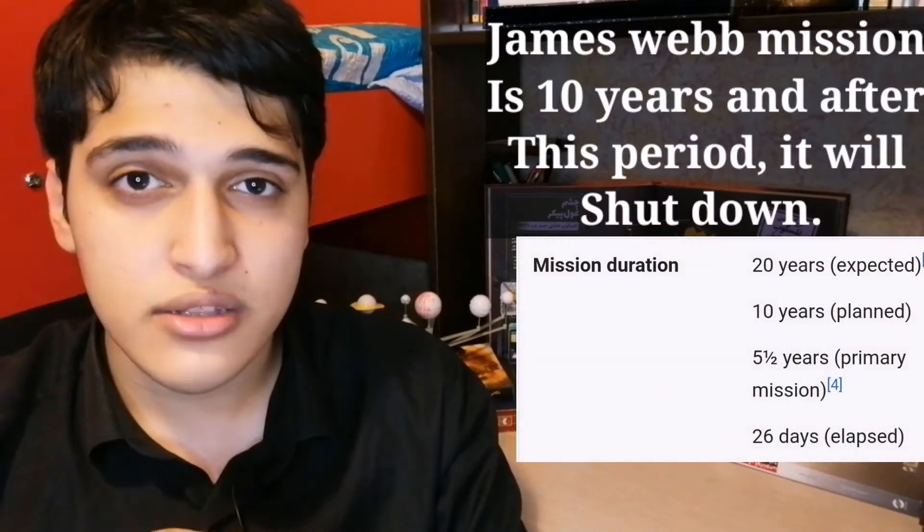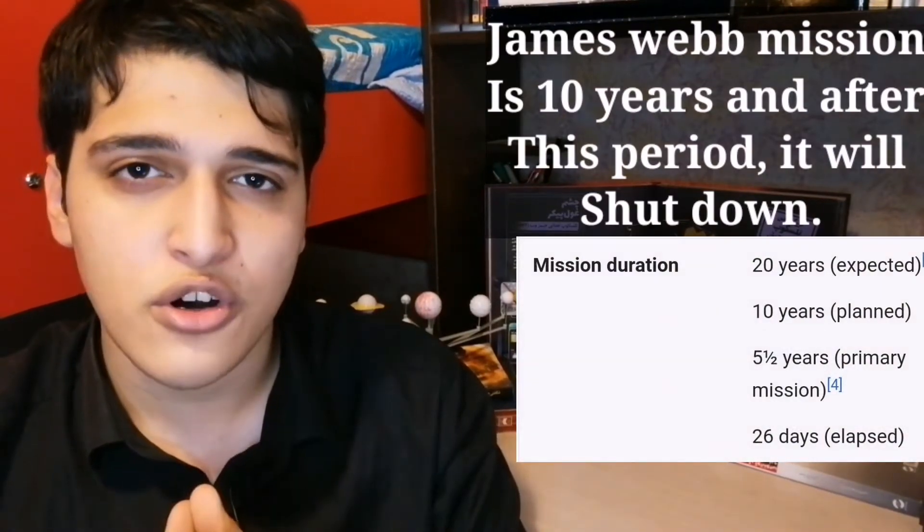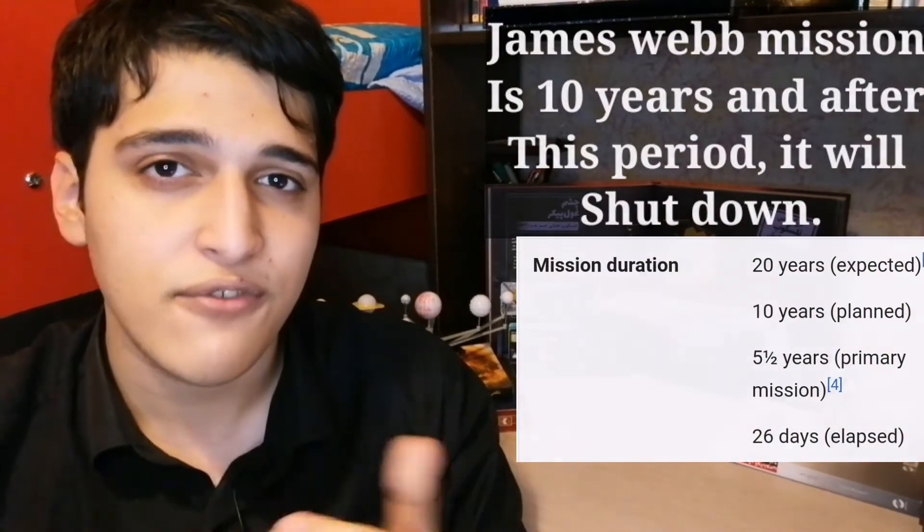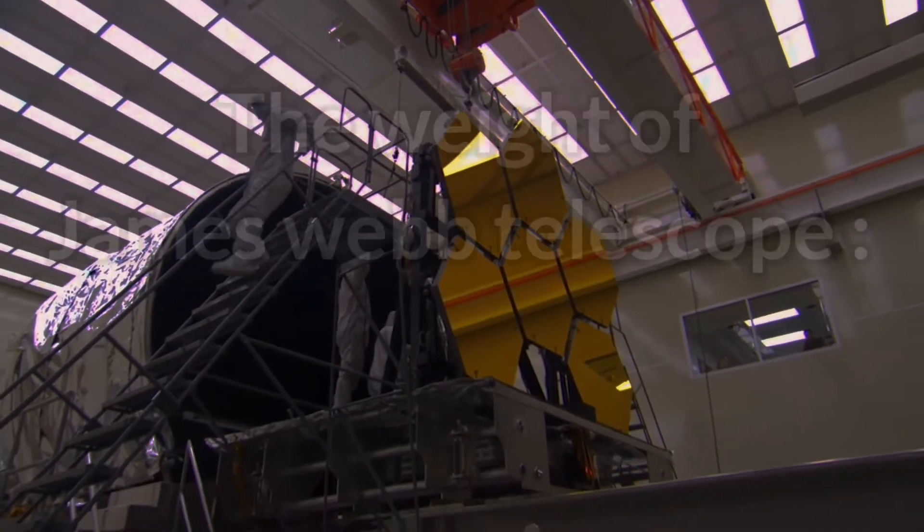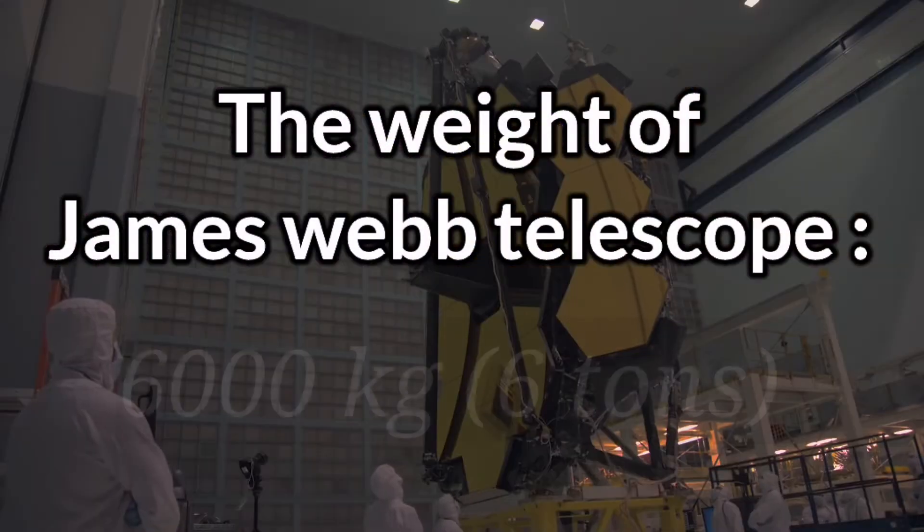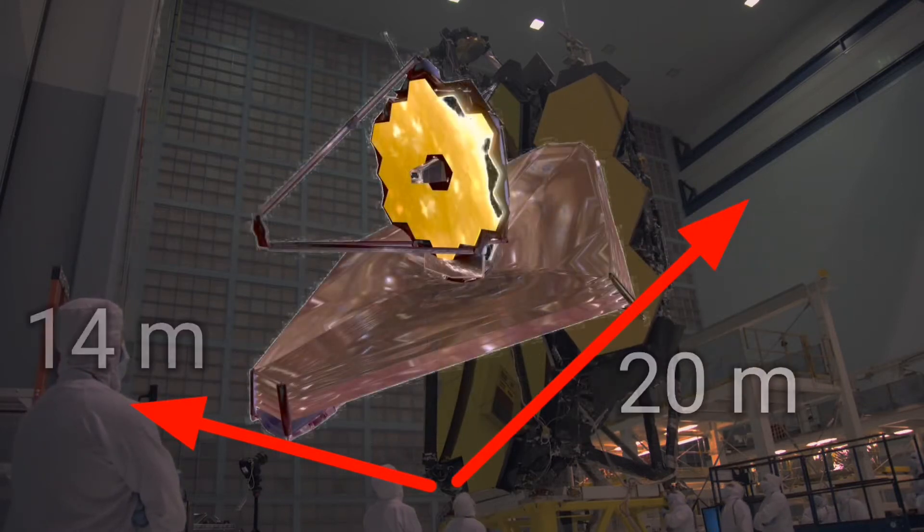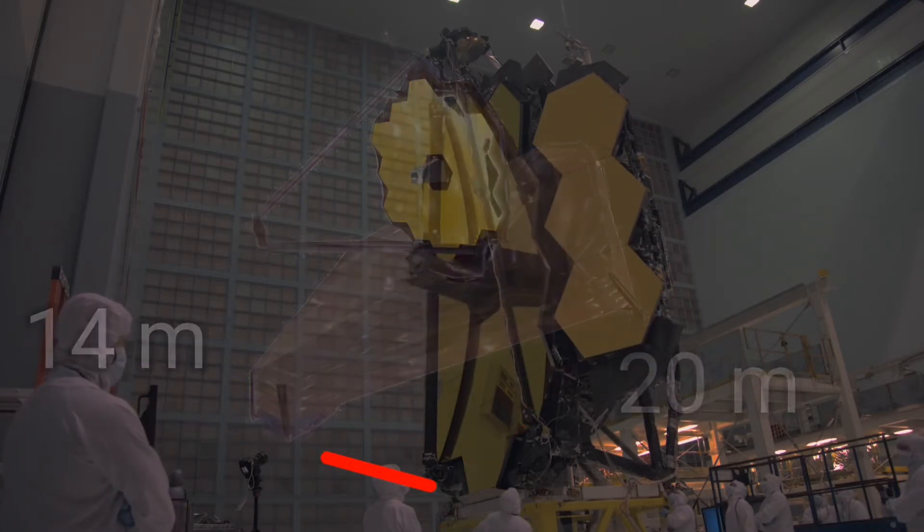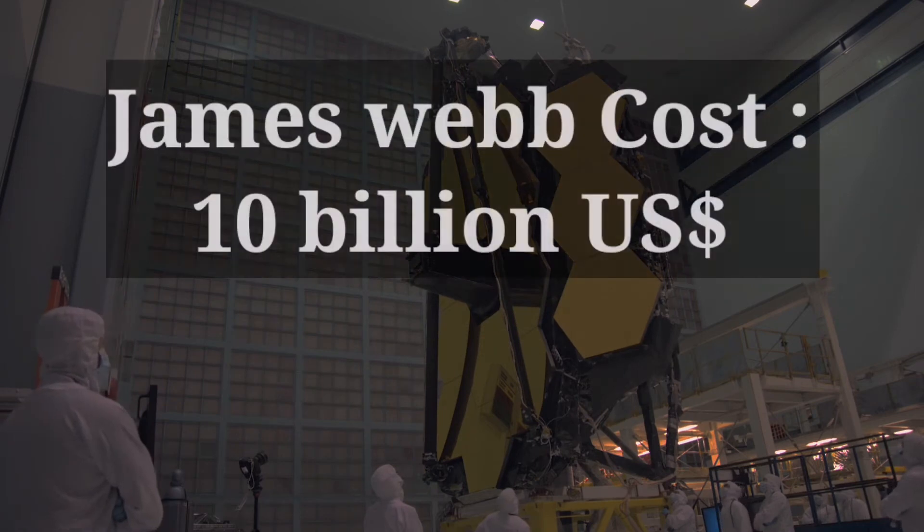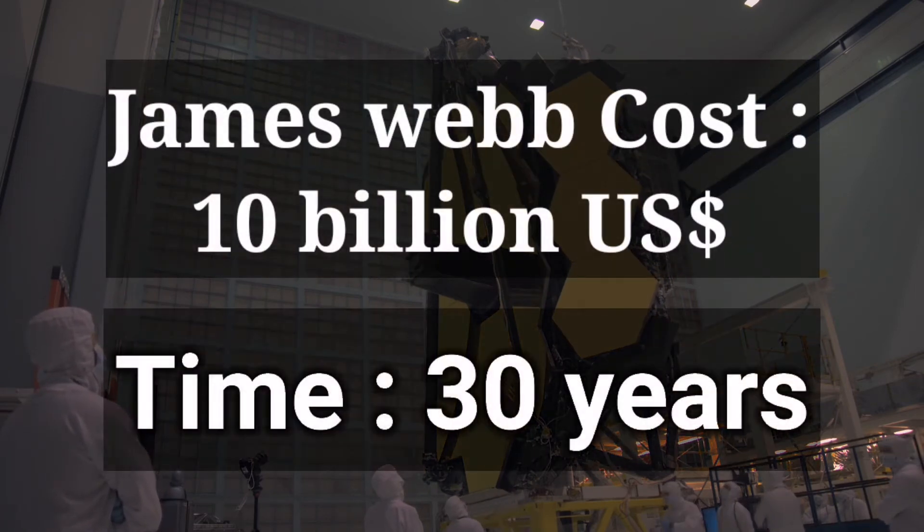The planned mission period for the James Webb Telescope is 10 years. If it worked very well, this amount of time will be enough for what kind of purpose that we have for James Webb. The weight of this telescope is 6,000 kilograms, and its dimensions are 20 meters by 40 meters. Scientists spent $10 billion on this telescope, and it took them 30 years to build it. Yes, 30 years!